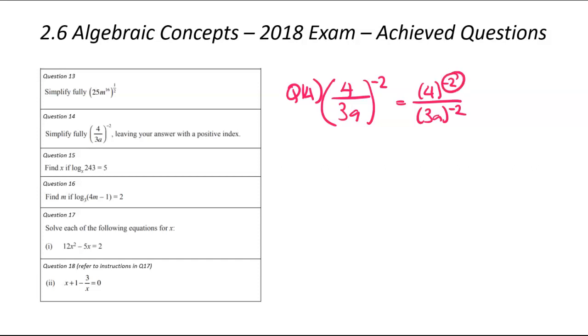So it would be 4 to the power of negative 2 divided by 3a to the power of negative 2. Once I've got this, I've got two negative powers. I'm going to do a bit of a switching trick and make them positive. So if I have this negative power and I move it to the denominator, so that's 4 squared, that power becomes positive, and that's what the question's asking us to do, a positive index. And I can do the same. I'm going to move the denominator to the numerator, and that's going to change the power to positive.